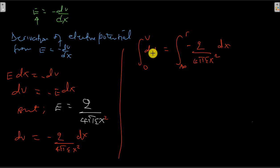So the integral from 0 to V of dV is going to be V. On the other hand, we have negative q over 4πε. If we integrate 1 over x squared, we have negative 1 over x from infinity to r.